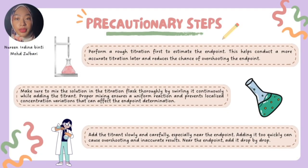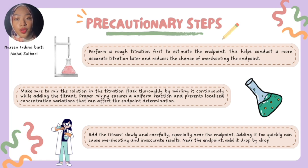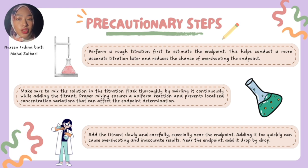Now we are covering some key precautions for successful titration. First, always start with a rough titration to estimate the endpoint — it sets the stage for precision and avoids overshoots. Next, swirl the titration flask continuously. Uniform mixing ensures a smoother reaction, preventing any concentration inconsistencies that could affect your endpoint.